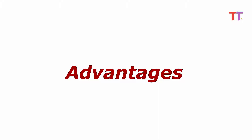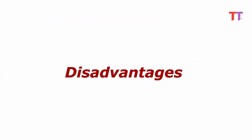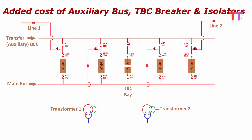Advantages of the main and transfer bus bar system: circuit breaker maintenance of any bay can be done without interrupting power supply, and this arrangement provides more flexibility. Disadvantage: the only disadvantage is that it adds up the cost of the auxiliary bus, TBC breaker, and isolators.